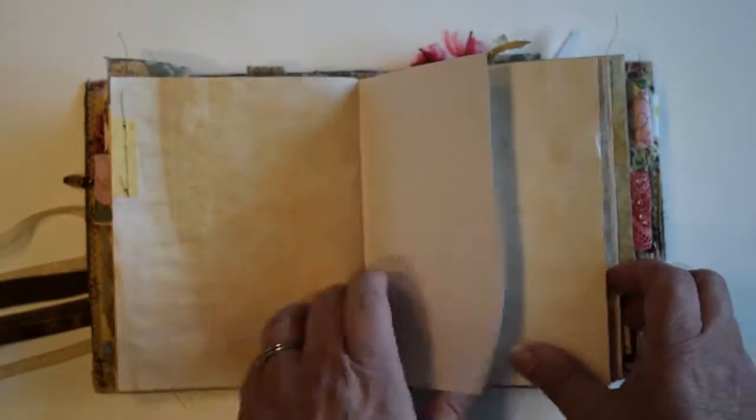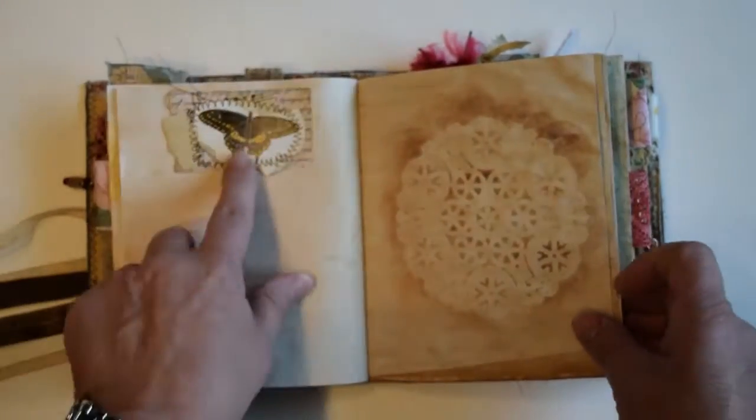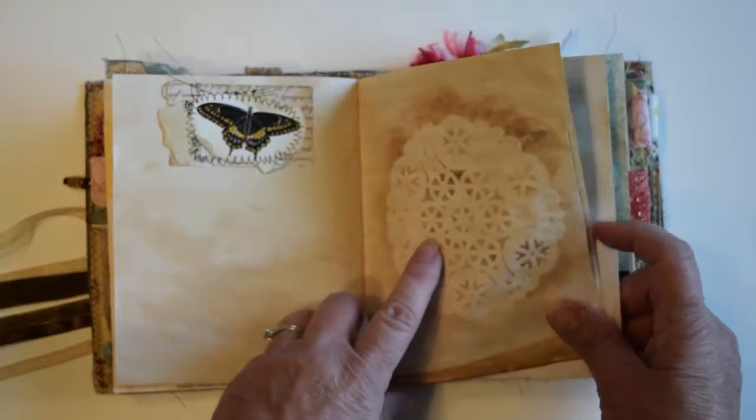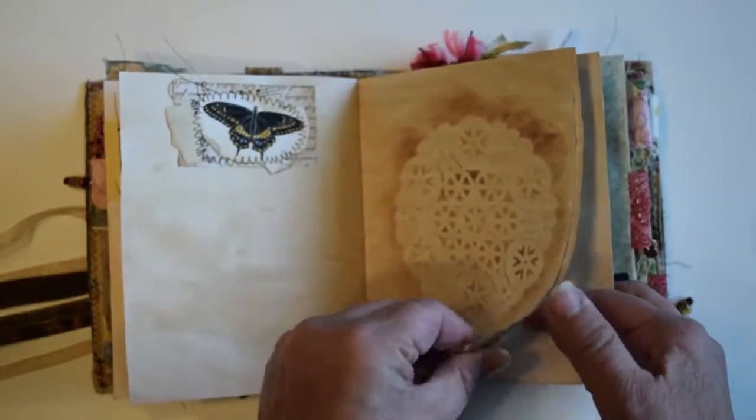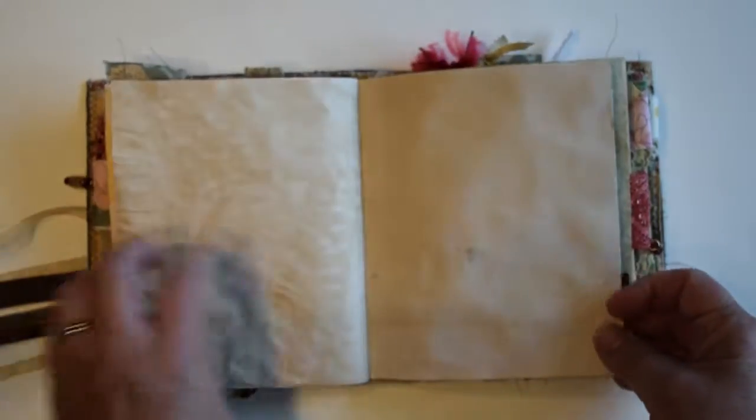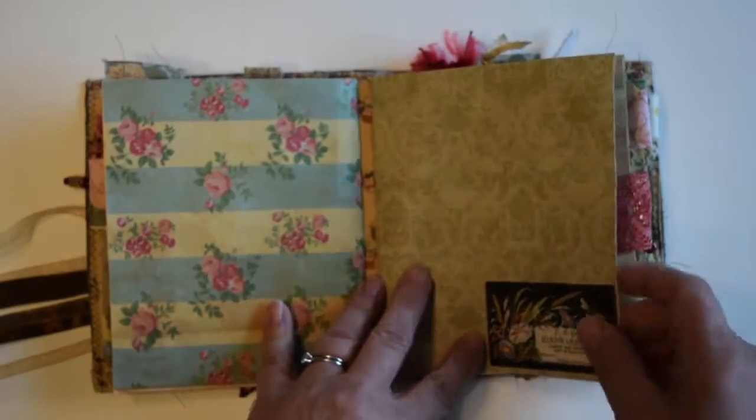Some ephemera cards, patterned paper, a little collaging there, and there's a doily mask. And that's the end of the first signature.